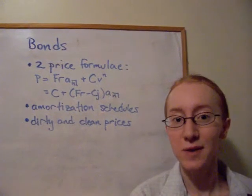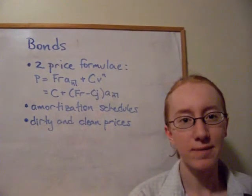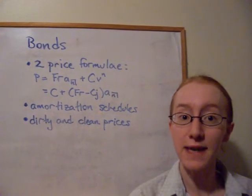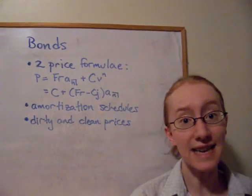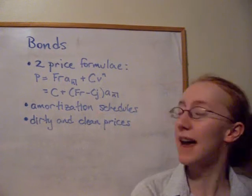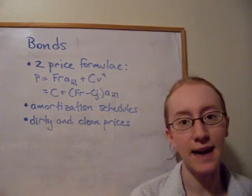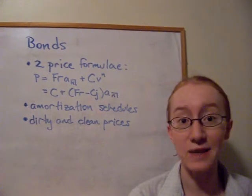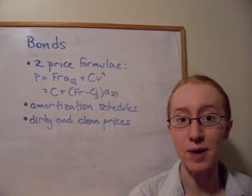We also include the present value at time zero of the redemption amount C, which is paid at time N, so we add C times V to the N. That's the easiest way to get the price of the bond.